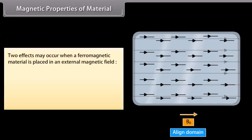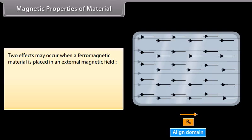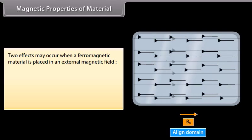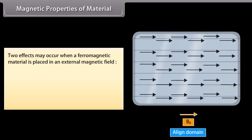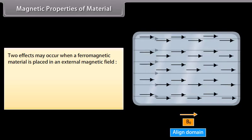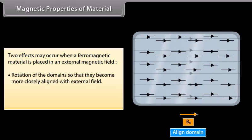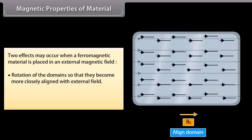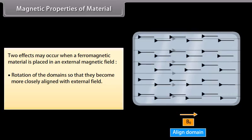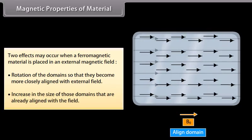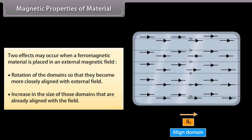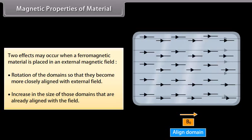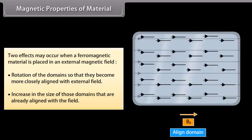Two effects may occur when a ferromagnetic material is placed in an external magnetic field: rotation of the domains so they become more closely aligned with the external field, and increase in the size of those domains that are already aligned with the field.